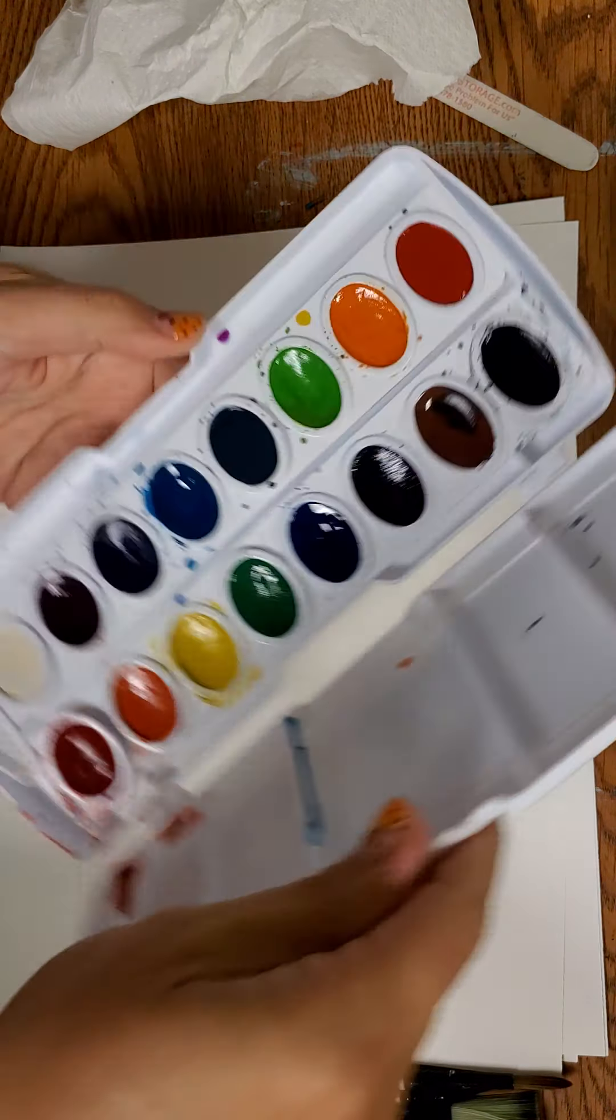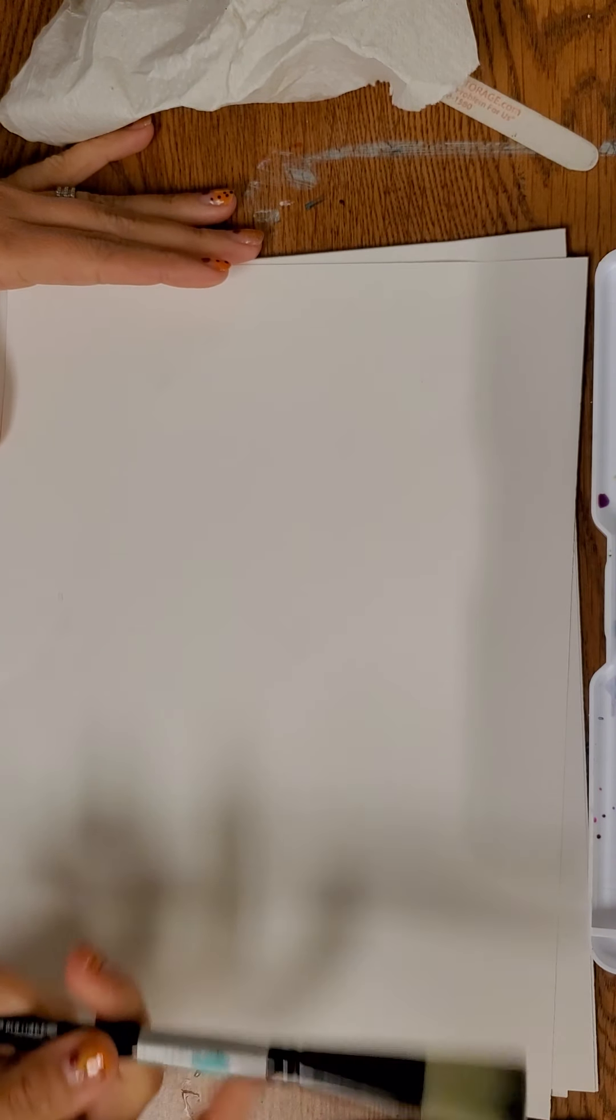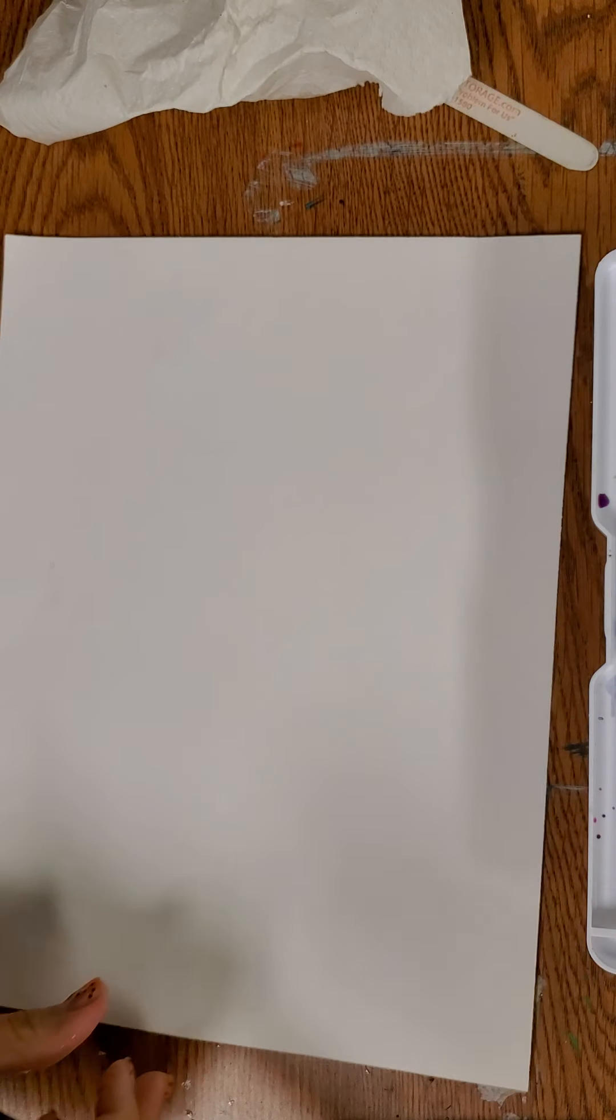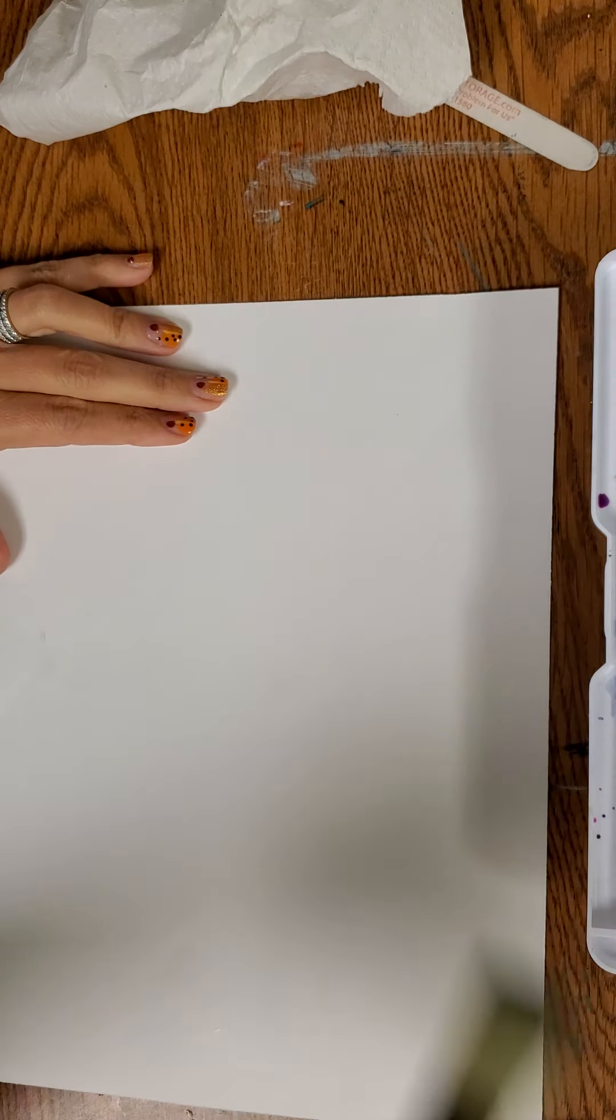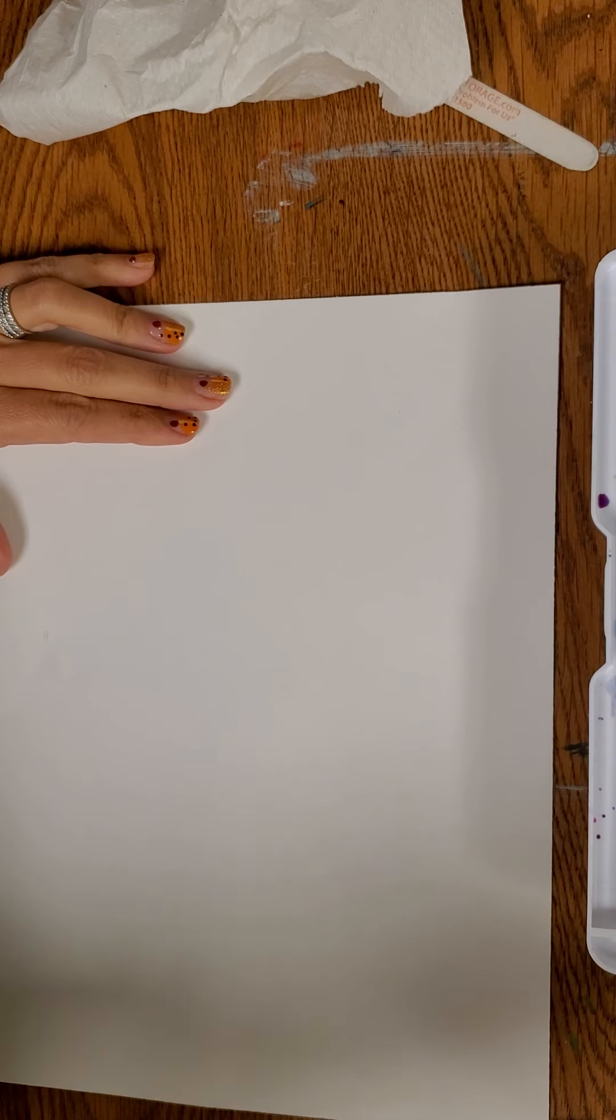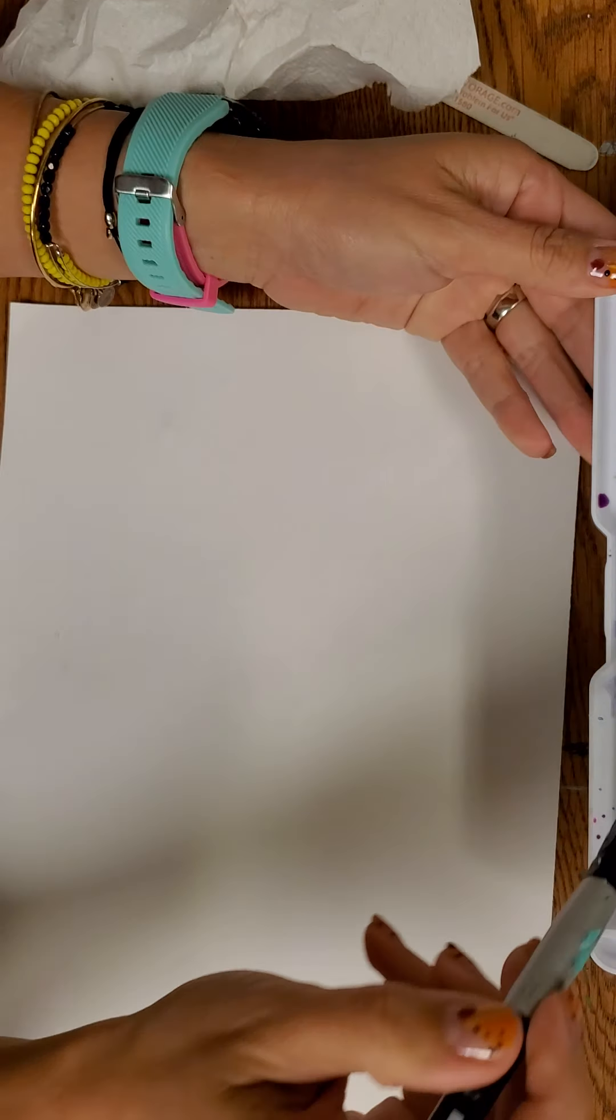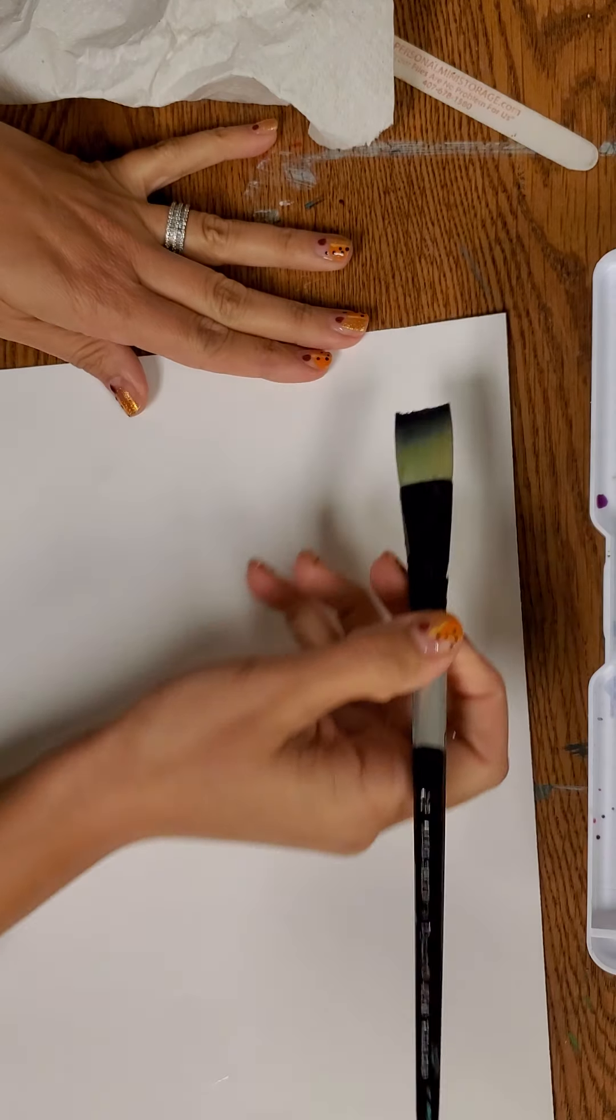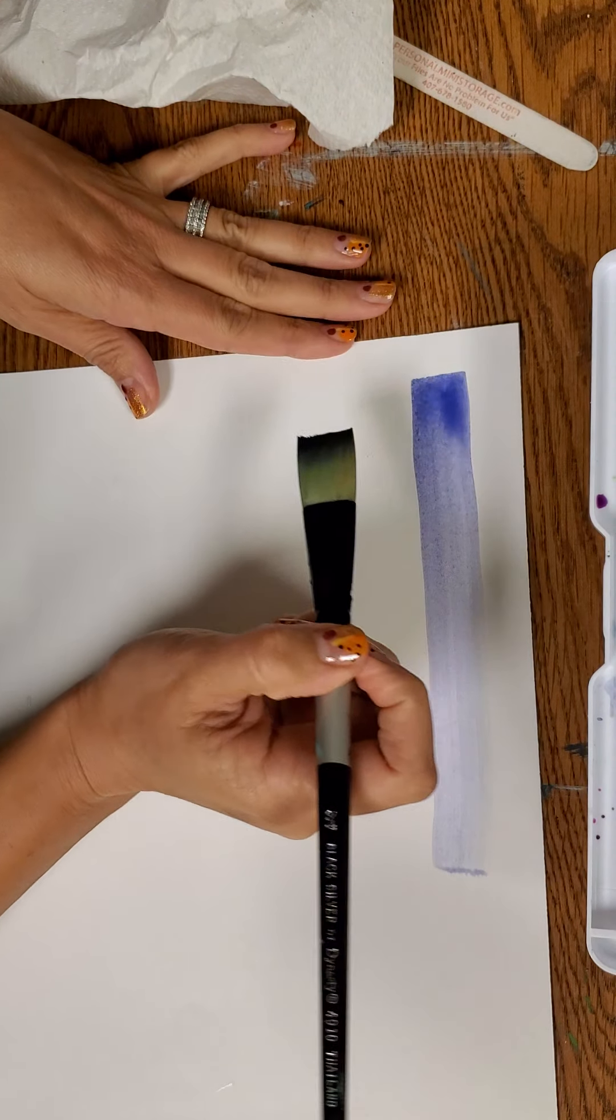I'm going to show you a couple different techniques so you'll know how to use them, but I'm going to start with my flat brush, and I'm going to do just a wet on dry. So I'm going to wet my paintbrush, pick whatever color I want—remember this is just practice—and then paint. This is going to create a really cool value.